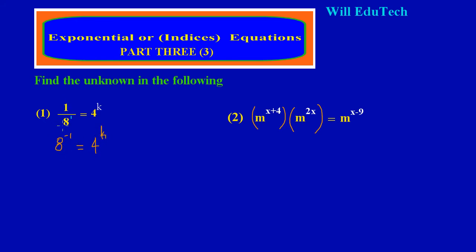I did this because I need the same base on both sides. So I'm going to write the 8 on my left-hand side as base 2 — we know 8 is the same as 2 to the 3 — and put that in a bracket raised to the negative 1. That equals 4, which can also be rewritten as 2 to the 2, put in a bracket and raised to the power of k.